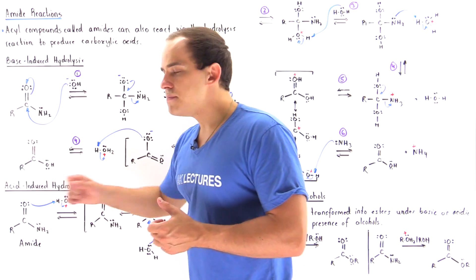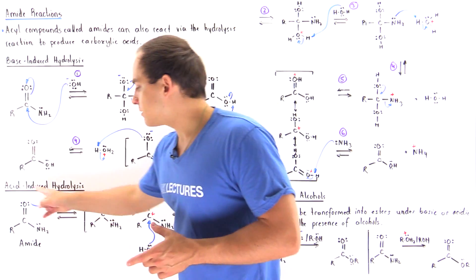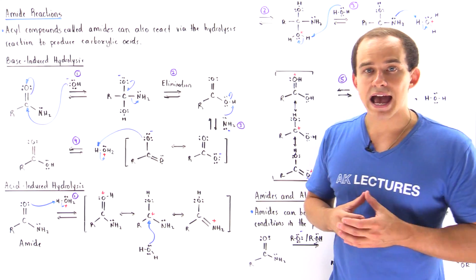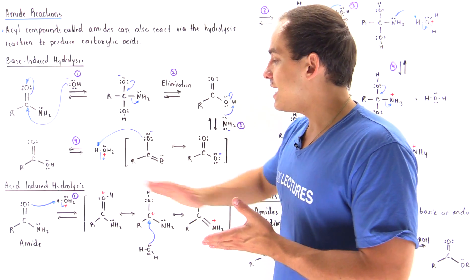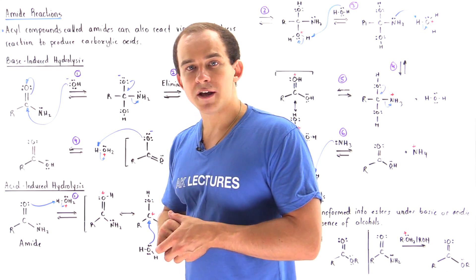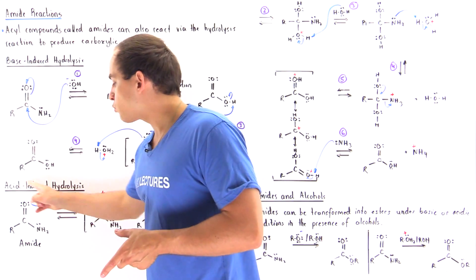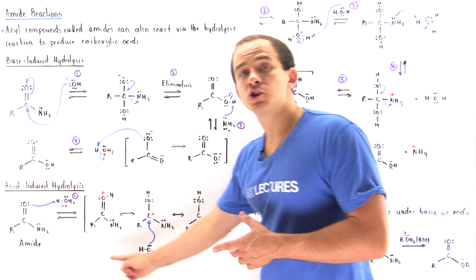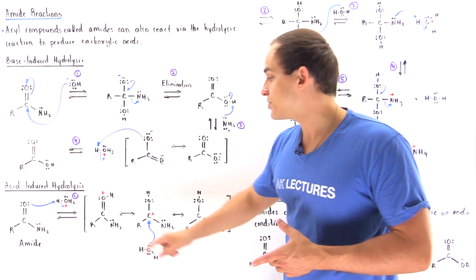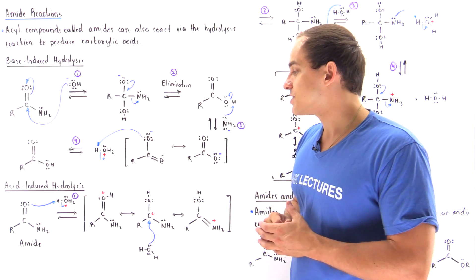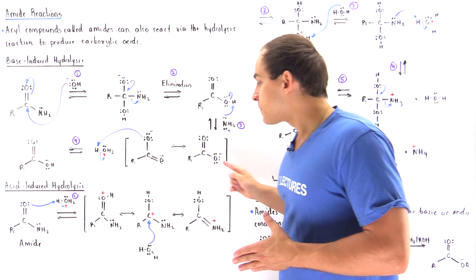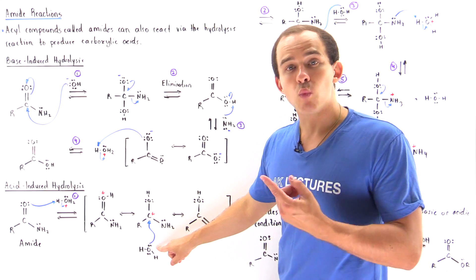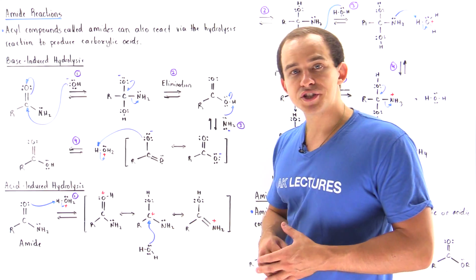In step one, we take the amide and protonate it using an acid — the acid present in the mixture is hydronium. This converts it from a relatively poor Lewis acid to a very good, resonance-stabilized Lewis acid. In step two, this strong Lewis acid can then react with the water molecule, our Lewis base.